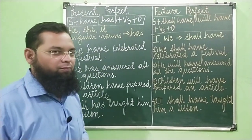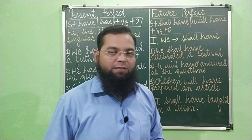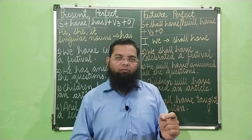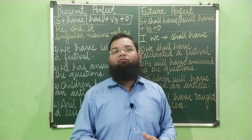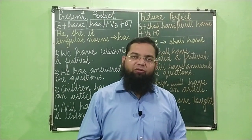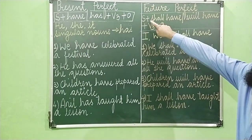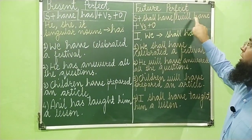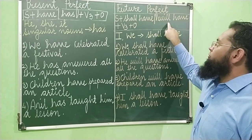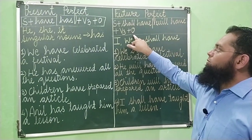Now let's have a look at future perfect tense. Future perfect tense will be used whenever a particular action will be completed in future. The modified equation of future perfect tense is: subject plus shall have or will have plus verb in third form plus object. Two helping verbs are given here — 'shall have' and 'will have' — but it is considered as one helping verb.